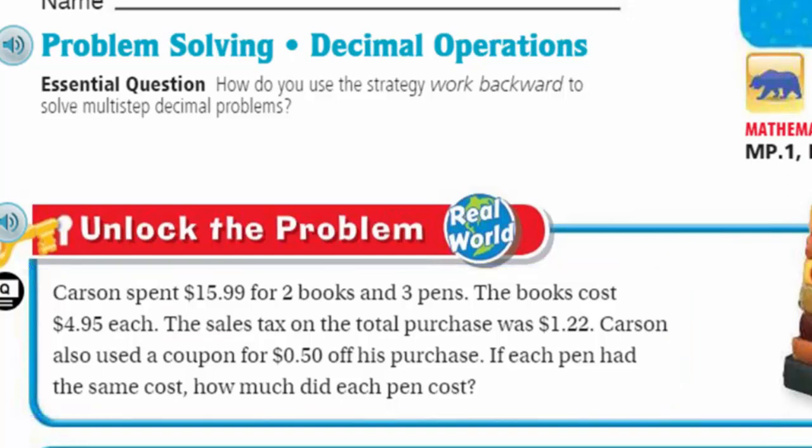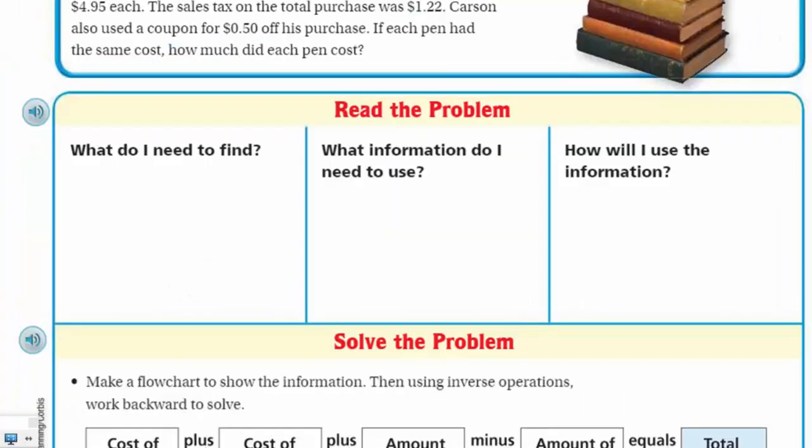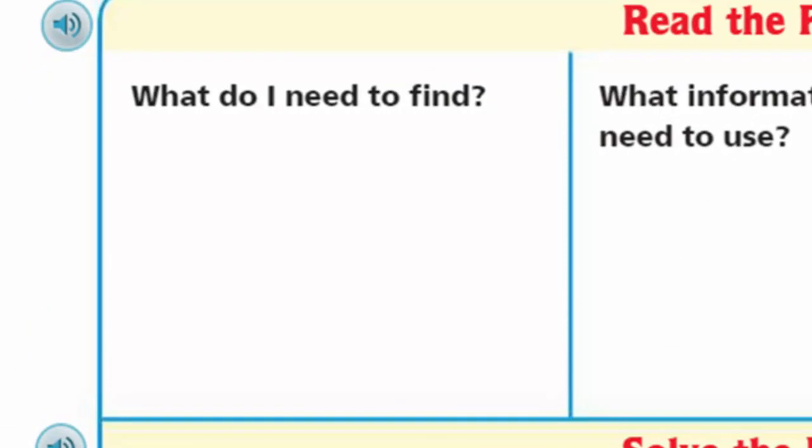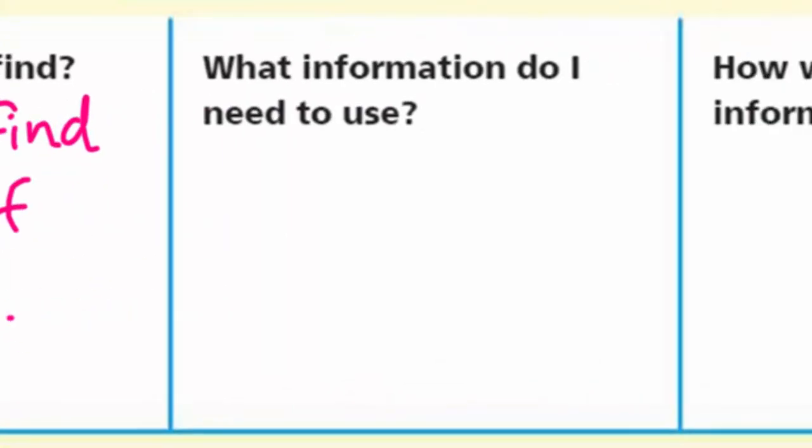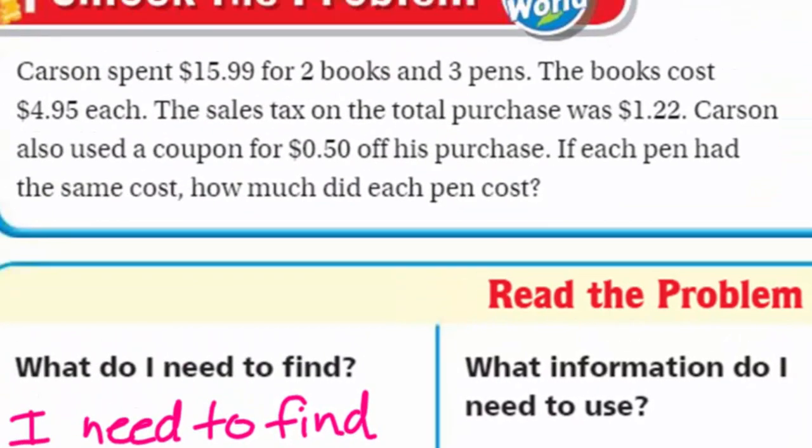As opposed to fake world, this is the real world. Carson spent $15.99 for two books and three pens. The books cost $4.95 each. The sales tax on the total purchase was $1.22. Carson also used a coupon for $0.50 off his purchase. If each pen had the same cost, how much did each pen cost? Wow, what a problem. You're thinking, Mr. Warrie, I'm seeing stars right now. But you know what? This is doable.